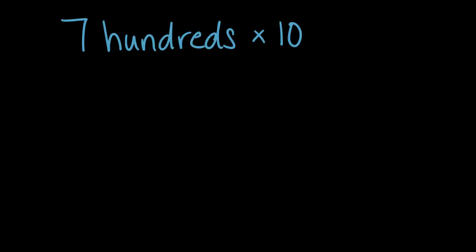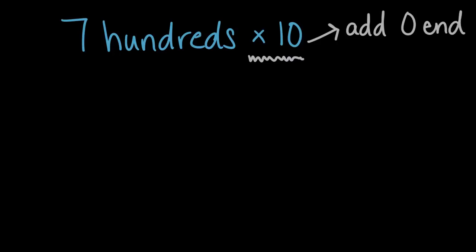What is seven hundred times ten? Let's focus first on the times ten part of our expression, because multiplying by ten has some patterns in math that we can use to help us solve. One pattern we can think of when we multiply by ten is if we take a whole number and multiply it by ten, we simply add a zero to the end. So for example, if we have nine and multiply by ten, our solution is ninety, because nine times ten is the same as nine tens.